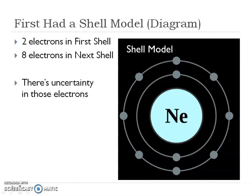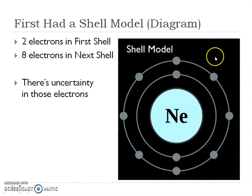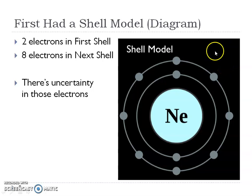You probably learned about that shell model and how there were two electrons in the first shell. We're going to call them energy levels now because electrons have energy. So we have two electrons in the first, eight in the second. There are 18 in the third, and 32 in the fourth, and that's going to be really important later on in these notes.